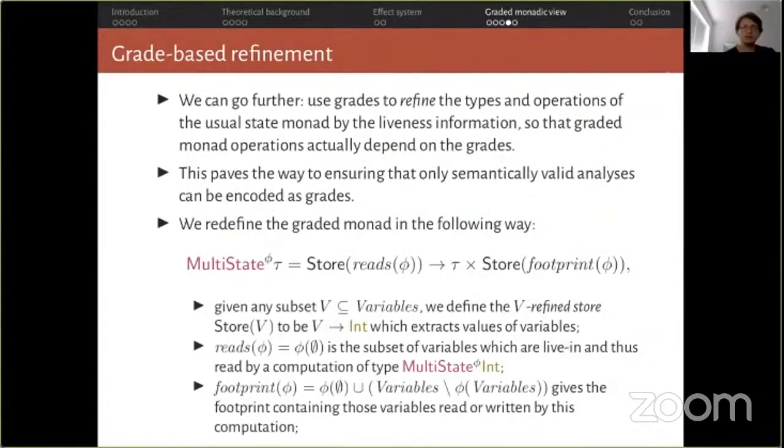We can use these transfer functions to extract the data flow values themselves by merely applying the grades to the empty set. For example, applying phi 0 to the empty set gives us the set yz, which was the same set of variables we computed before for the 0th statement. This graded monad was merely a wrapper. The grade said nothing about the shape or format of the values. We can go further. Grades are used to refine the types and operations of the usual state monad by the liveness information. Graded monad operations now take into account the grades, and the grades say something about the shape of the values. In a way, we want to remove dead variables from the state and forget what they are. This paves the way to ensuring that only semantically valid analyses can be encoded as grades.